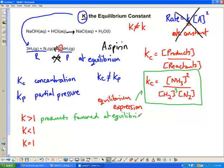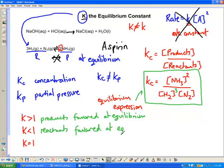If you have a K value bigger than one, your products are going to be favored at equilibrium — more products than reactants. A K of less than one means exactly the opposite: the reactants are favored at equilibrium. And there are a lot of reactions like this. A K equal to one means the concentration of products and reactants is exactly the same — it means the reaction is already at equilibrium. This last case is very rare.